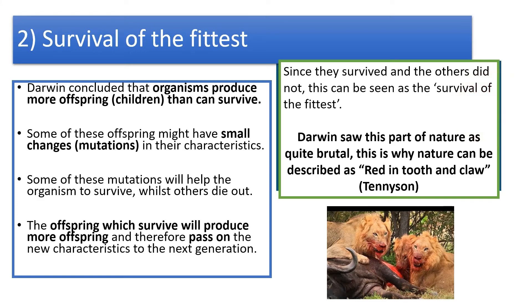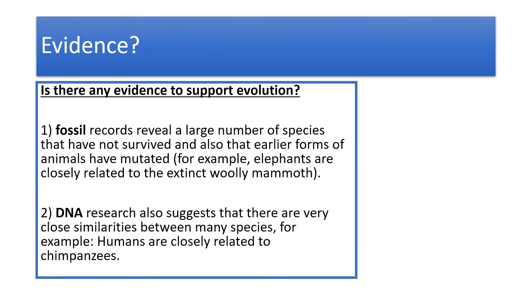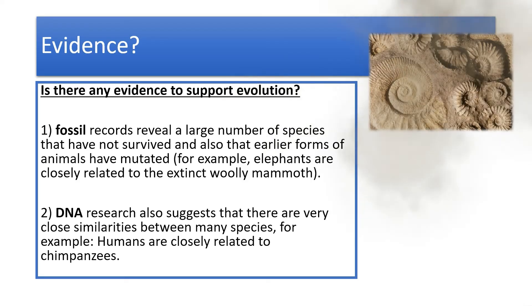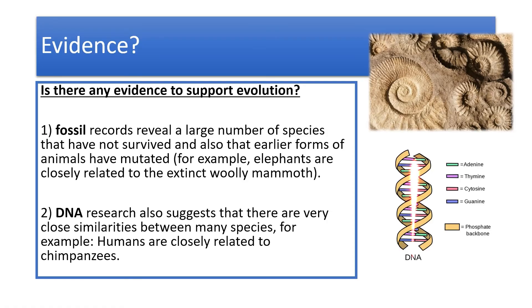So those are two key phrases you need to be aware of. Is there any evidence for this? Yes, there is. Firstly, we have fossils. Fossils reveal a large number of species that haven't survived, and they also show earlier forms of animals that have gone on to mutate — for example, we can draw a link between elephants and woolly mammoths. Finally, when we look at genetic code or the DNA of creatures and organisms, we can see very close similarities between different types of species. It's how we know humans are more closely related to chimpanzees than to gorillas or orangutans.